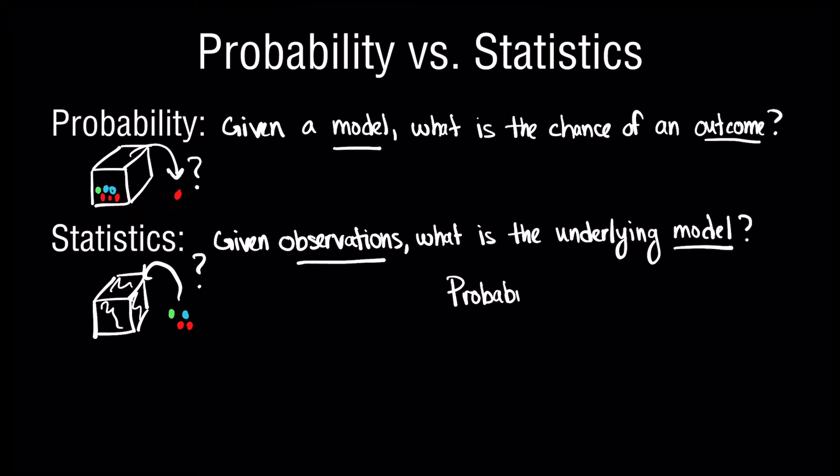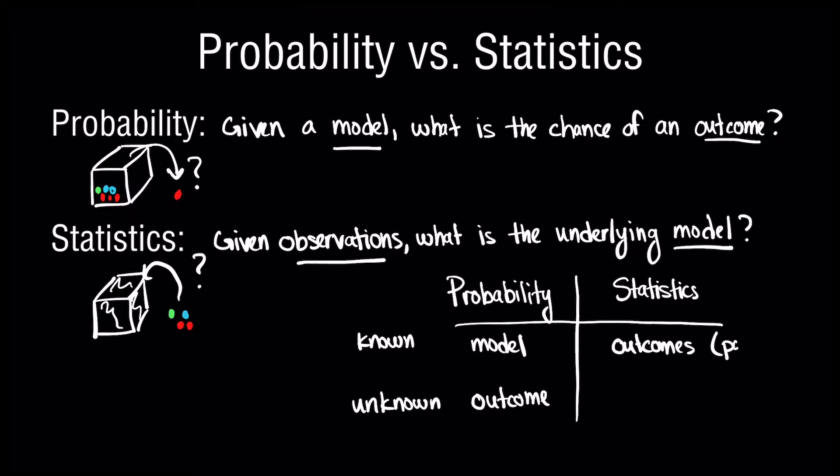So the field of probability is one where you're given a model for a particular system or application, and what's unknown is the associated outcome. That's what we're interested in predicting and trying to quantify. Conversely, in the field of statistics, it's the outcomes which are from the past that are known to us, and what we're now trying to do is infer an underlying model. So the underlying model is now what's unknown, that is what is probabilistic to us.